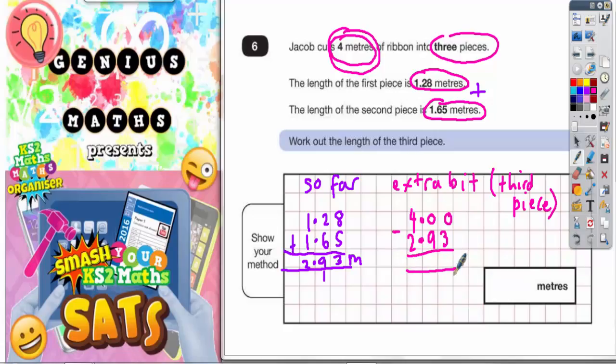Now all we need to do is work that out. So 0 take away 3, we can't do, so we need to borrow. But we can't borrow from this 0 because there's nothing there to borrow from. So we need to borrow from the 4. Cross out the 4 and make that into a 3. And the 1 you borrowed goes next to this 0 to make 10.